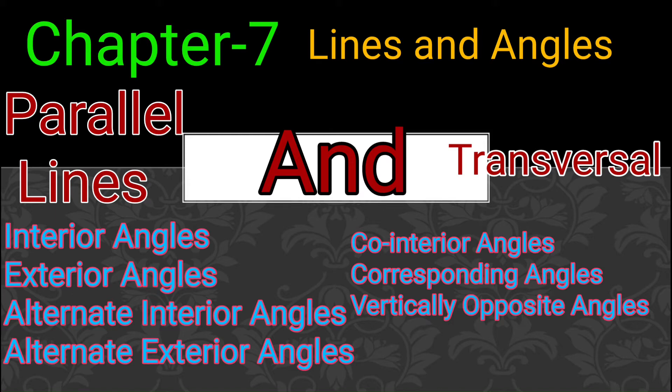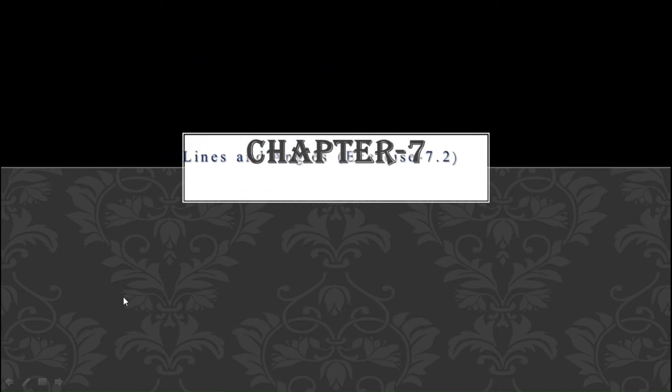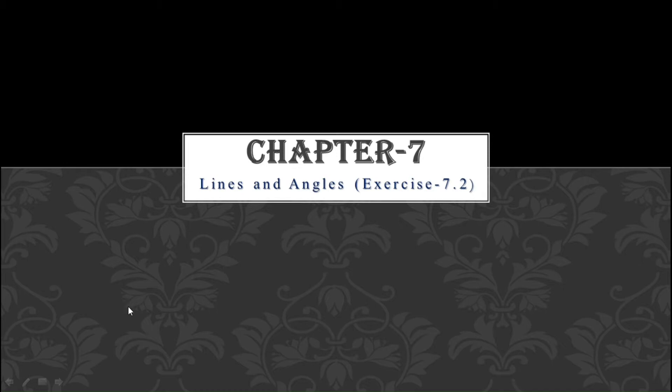We will begin with the new exercise today — chapter 7, lines and angles — and I will be explaining a few questions of exercise 7.2. Without any further ado, let us begin with question number 1. In this first question, you will find a line T and determine whether that line T is a transversal to the other lines or not.